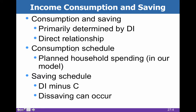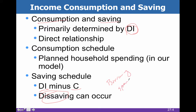Consumption and savings are sort of inverse to each other and are primarily determined by disposable income. The consumption schedule is how much households plan on spending, and the savings schedule is how much they plan on saving, which is disposable income less consumption. There can be what we call dissaving, which happens through either borrowing or spending what you previously saved.